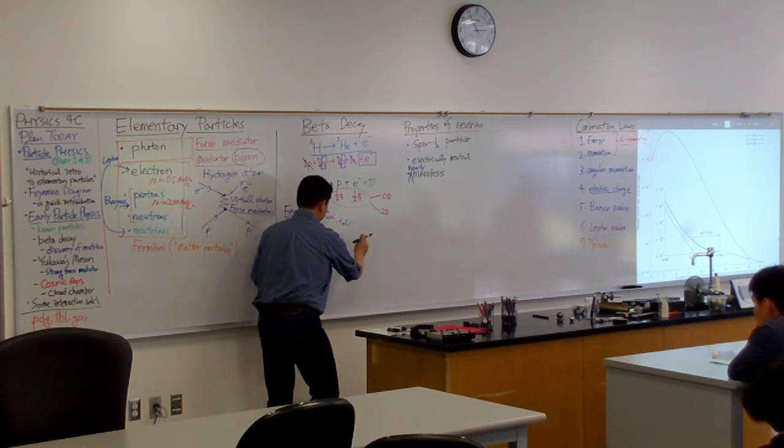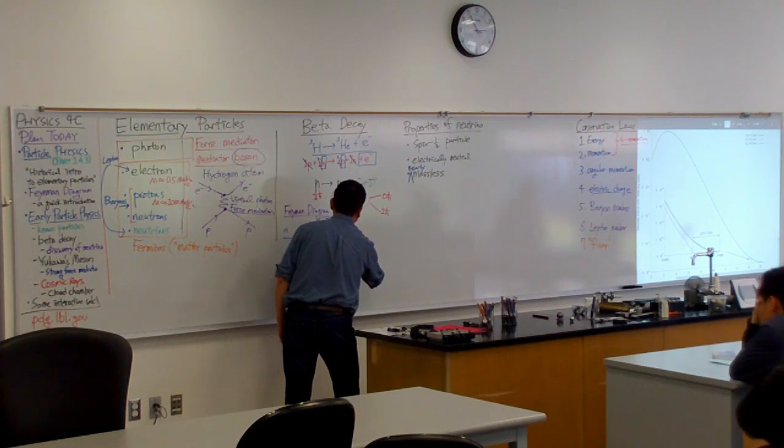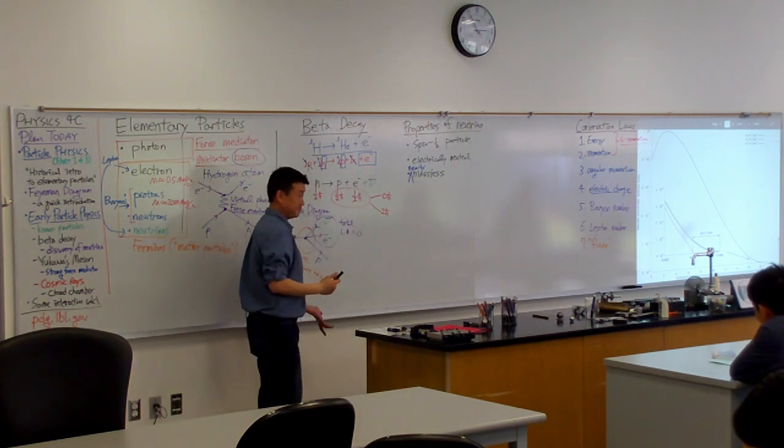and you have minus one lepton number going up for a total of, so total, oops, I'm not spelling total right, for the total lepton number of zero. Good?